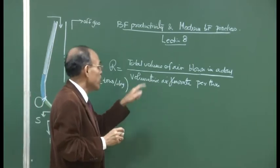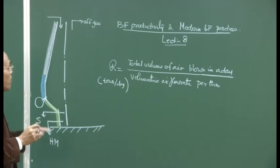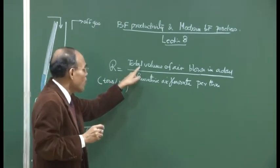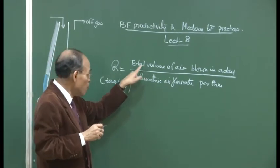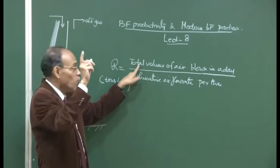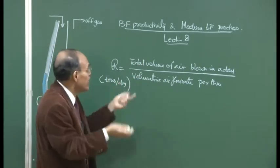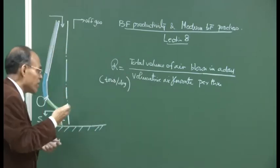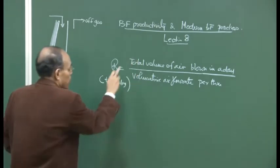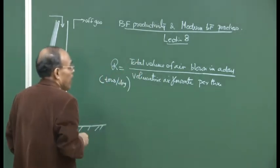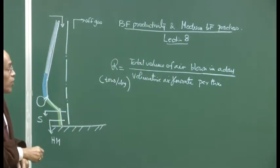R can be increased by increasing the numerator — blowing more volume — or by decreasing the denominator, or by simultaneously increasing the numerator and decreasing the denominator. There are three ways of doing it: keep one fixed and increase the other; keep one fixed and decrease the other; or simultaneously adjust both.